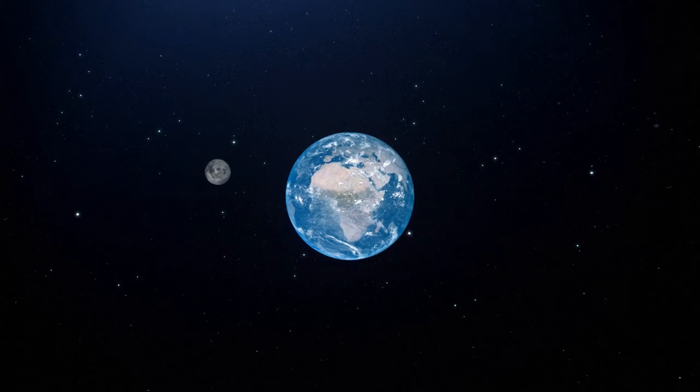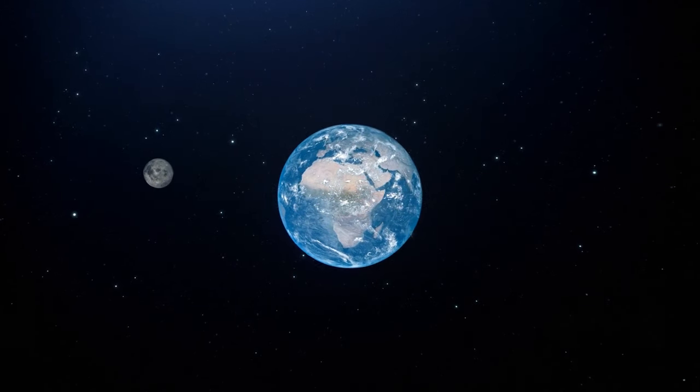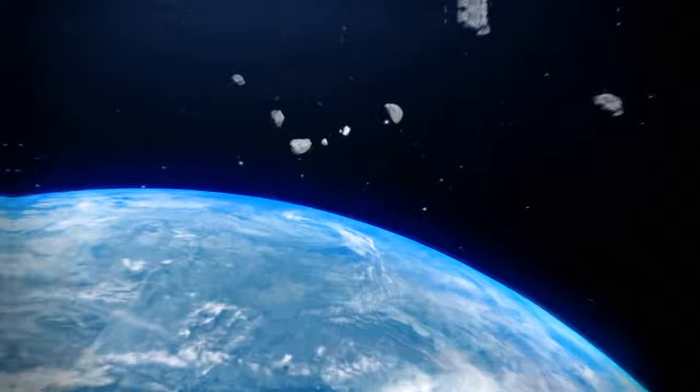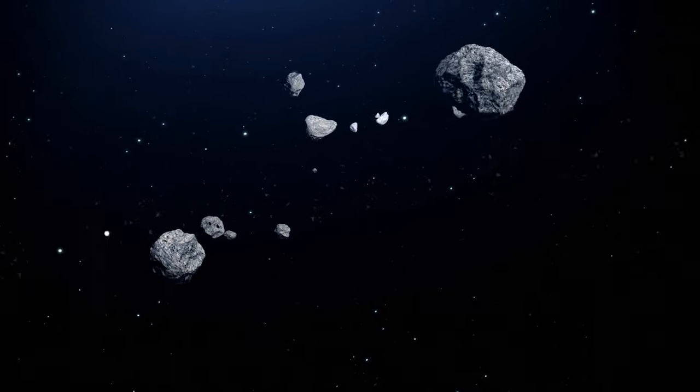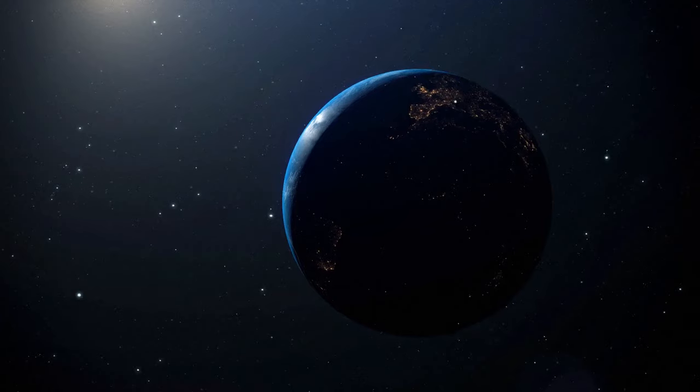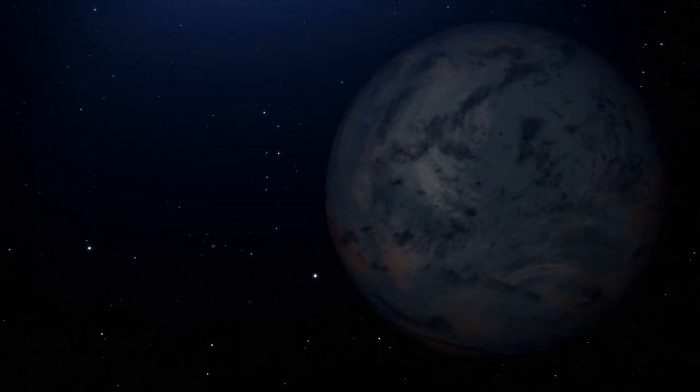The answer is, nobody knows. But of course, there are theories. The most popular one, called the Giant Impact Theory, claims that the Moon formed during a collision between Earth and another planet. This planet must have been smaller than ours, the size of Mars. And the collision itself probably happened around 4.5 billion years ago.